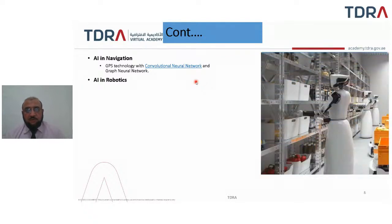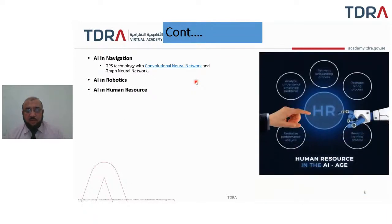These robots are working in different industries. For example, some robots work in a departmental store, arranging things in different drawers. Then we have AI in human resources, which is helping by reinventing the onboarding process, reshaping the hiring process, revamping the training process, analyzing and understanding employee problems, and revitalizing performance analysis.